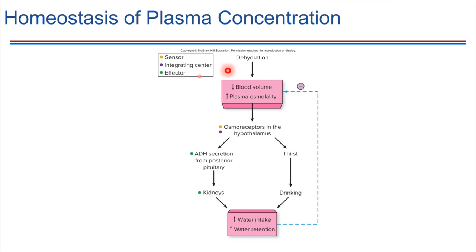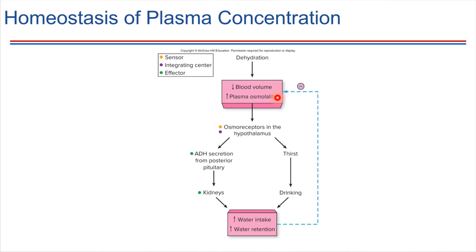Let's consider an example. Suppose somebody starts to get dehydrated — either they weren't drinking enough water or they've been exercising strenuously. What that means inside the body is that blood volume will actually drop; there will be a decrease in the amount of blood flowing through the body. In turn, the osmolality of the blood plasma increases because there's less water present. All the same solutes are still there, there's just less water, so osmolality increases.